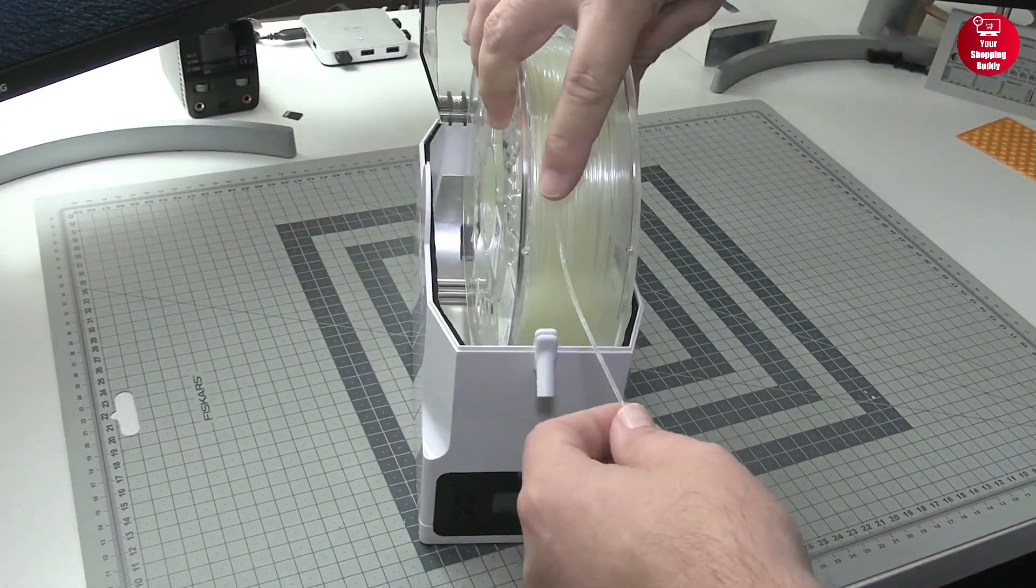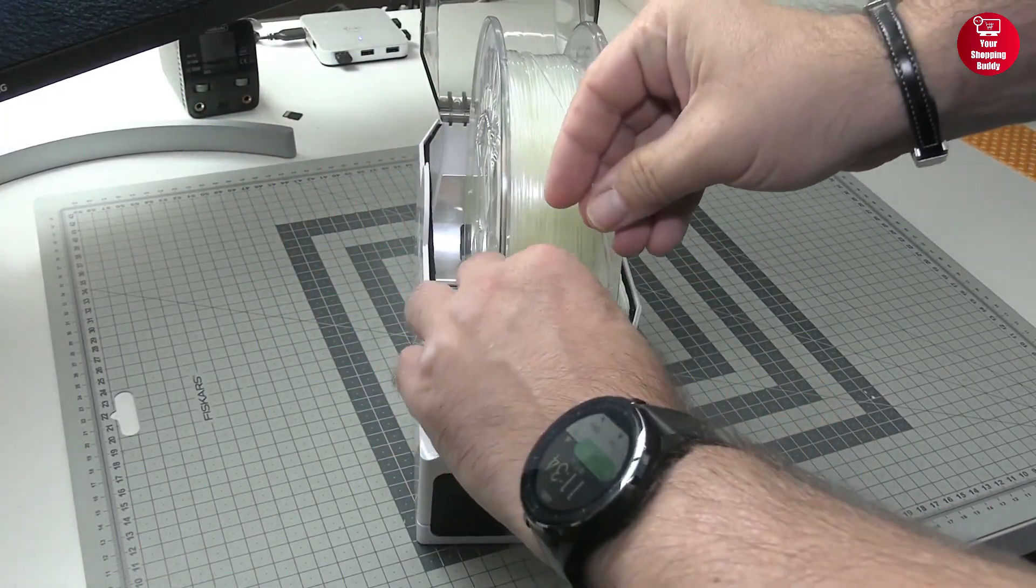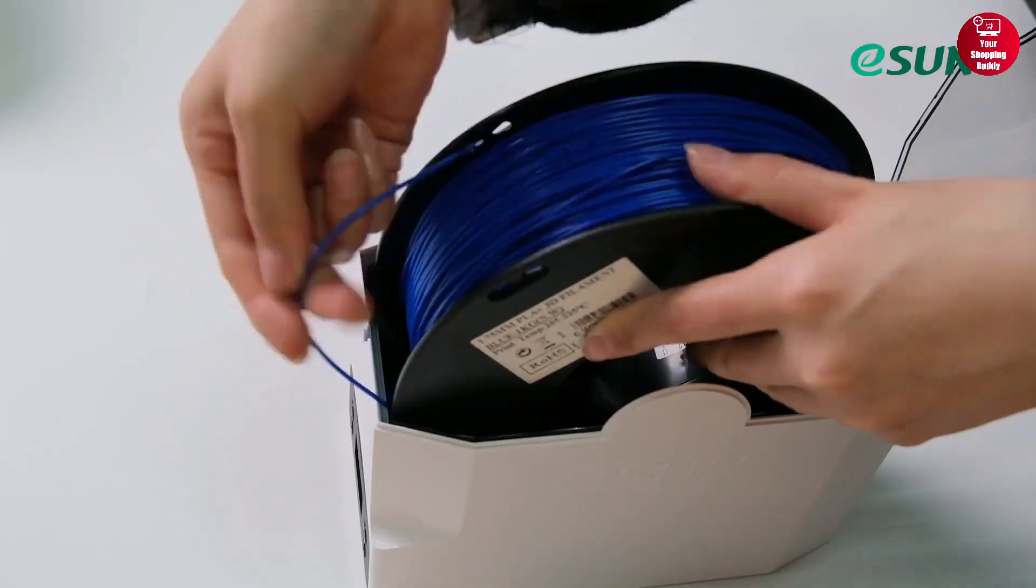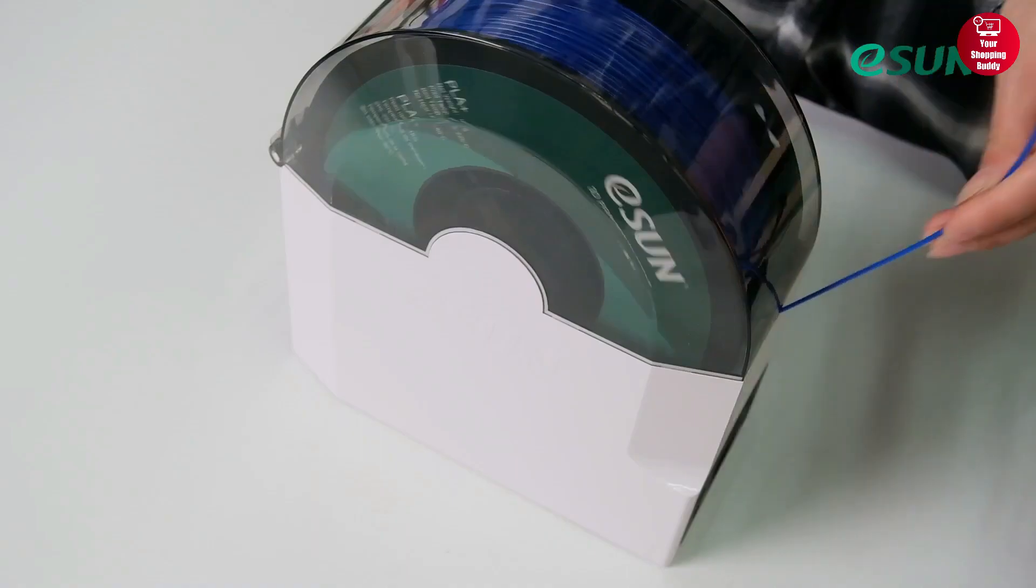So if you're looking for a long-lasting filament dryer box with features like a transparent lid design and a low-noise turbo fan, then the E-Sun E-Box can be an excellent pick.